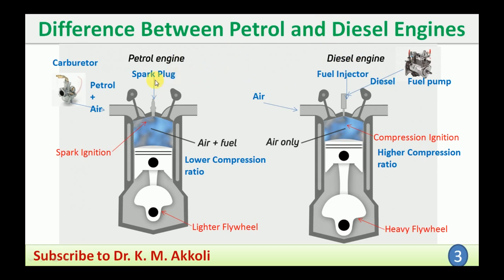Next, whatever charge enters into the engine cylinder during the intake stroke — in the petrol engine, it consists of a carburetor. The carburetor is the device which mixes the petrol and air properly. It atomizes the petrol, mixes it with air, and supplies a proper petrol-air mixture to the engine cylinder during the intake stroke. Therefore, the mixture entering the engine cylinder is the petrol and air mixture during the suction stroke.